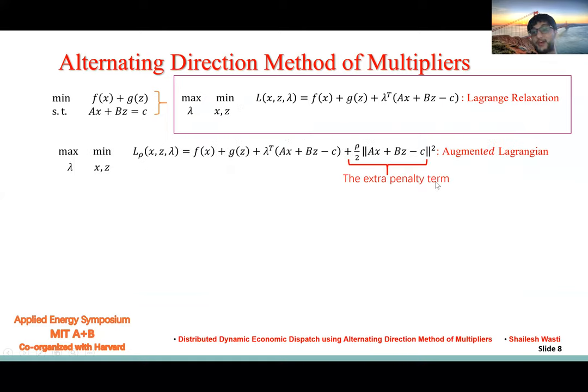The lambda is a dual variable associated with the equality constraint and that's what the market price is. In order to improve the convergence speed of the problem, an extra penalty term is added and this is now called the augmented Lagrangian. But the convergence speed comes at a cost of sacrificing the decomposability property of the problem.